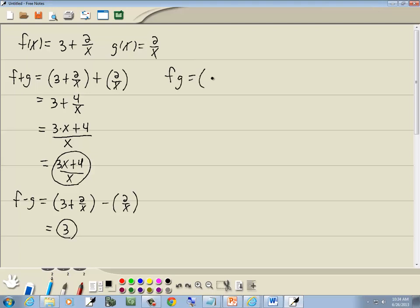Now for multiplication. Again, I'll put parentheses around them and put them next to each other. Now this is the distributive property. So we're going to take 2 over x times 3, and 2 over x times 2 over x. Well, 2 over x times 3 gives us 6 over x.